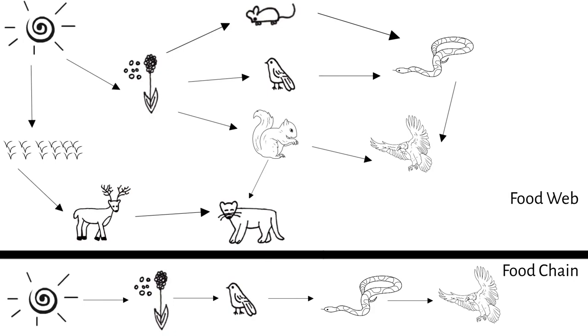You can see how food webs can be a bit messier than food chains with lots of organisms and arrows, but they are useful for seeing multiple energy paths, while food chains are useful when focusing on one.